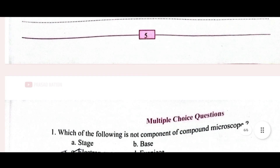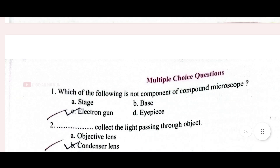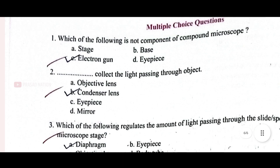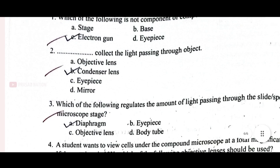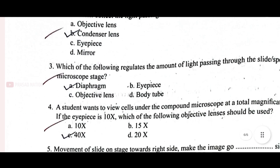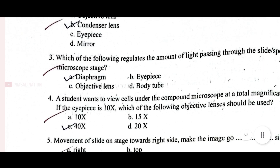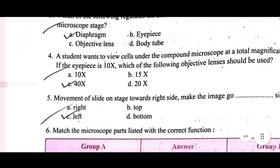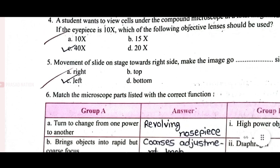On the last page we have some MCQs, and I have marked the right answers. First one is 'electron gun,' second is 'condenser lens,' third is 'diaphragm,' fourth is '40x,' and fifth is 'left.'